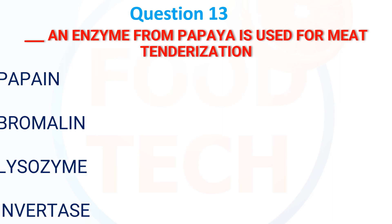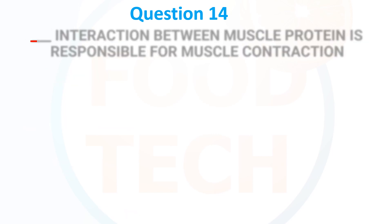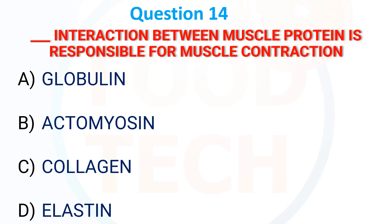Options: A) Papain, B) Bromelain, C) Chymotrypsin. The answer is A) Papain. Interaction between muscle proteins responsible for muscle contraction: